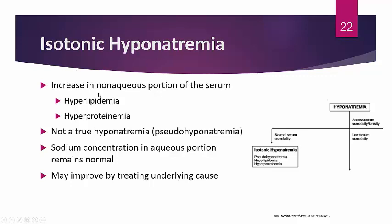Starting with less common types: isotonic hyponatremia results from an increase in the non-aqueous portion of serum, seen in hyperlipidemia or hyperproteinemia. These conditions take up more of the serum, making the remaining aqueous portion appear to have lower sodium — this is actually a pseudohyponatremia. The actual sodium concentration in the aqueous portion remains normal.